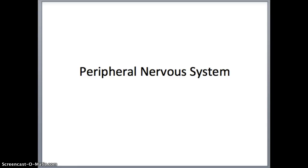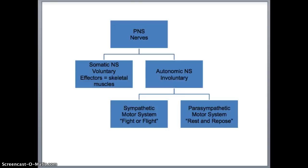Peripheral nervous system video. So we have talked about the central nervous system ad nauseum — the brain and the spinal cord. Now we're going to get into the peripheral nervous system. It is divided into many other systems. First, it's divided into the somatic and the autonomic nervous system, and then the autonomic nervous system is further divided into the sympathetic and the parasympathetic nervous system.